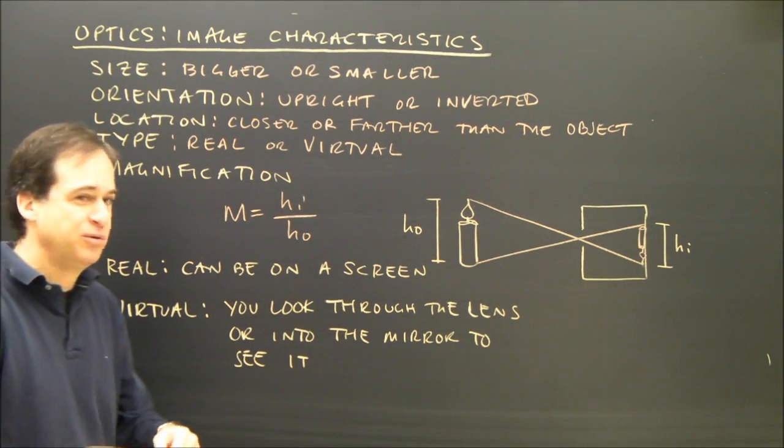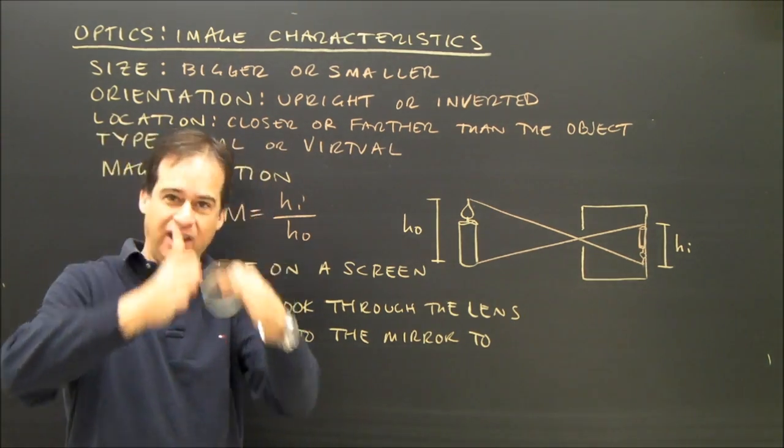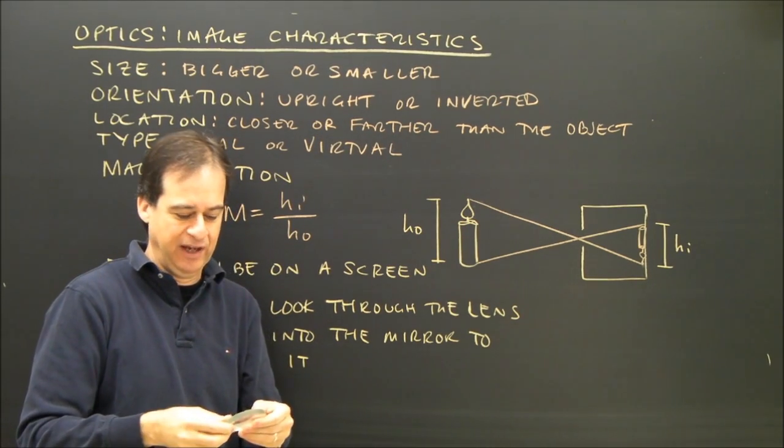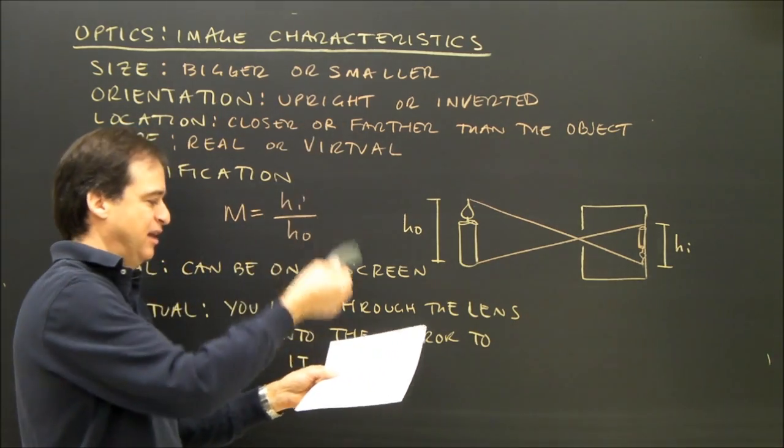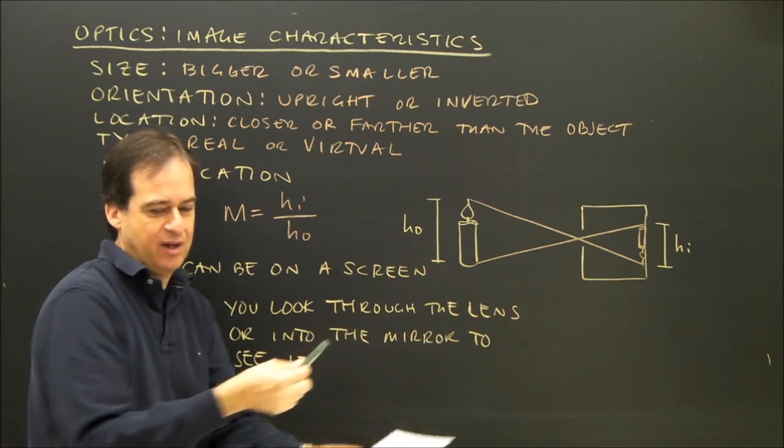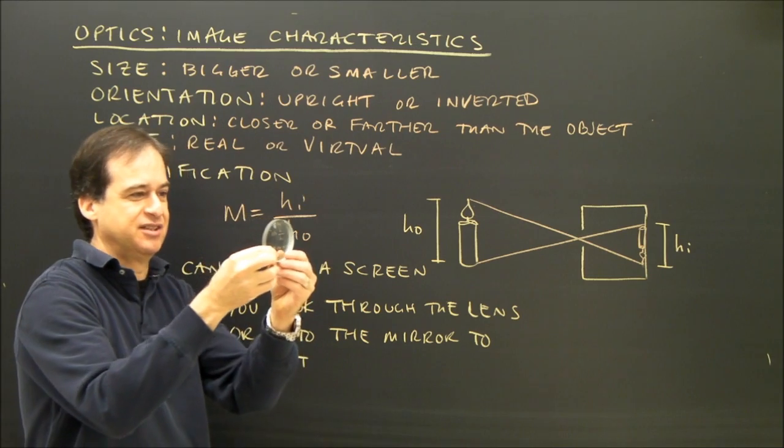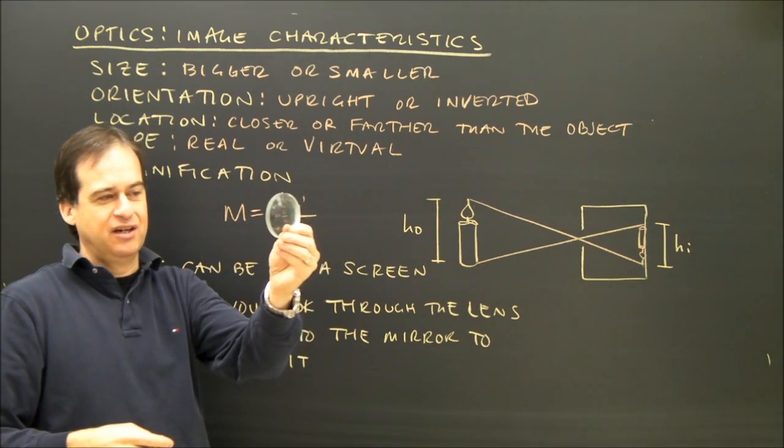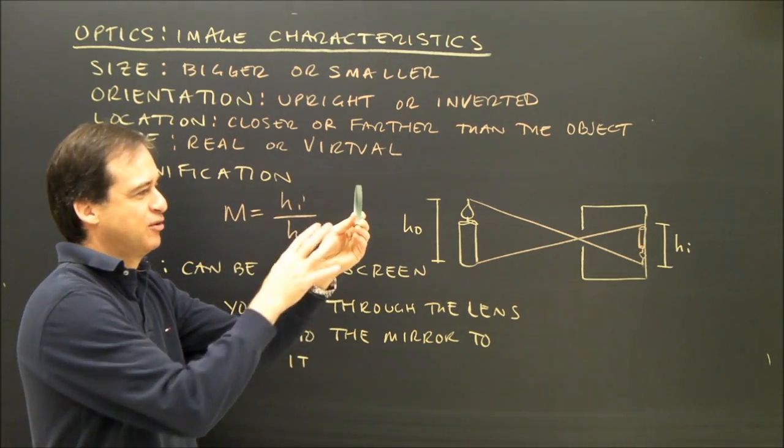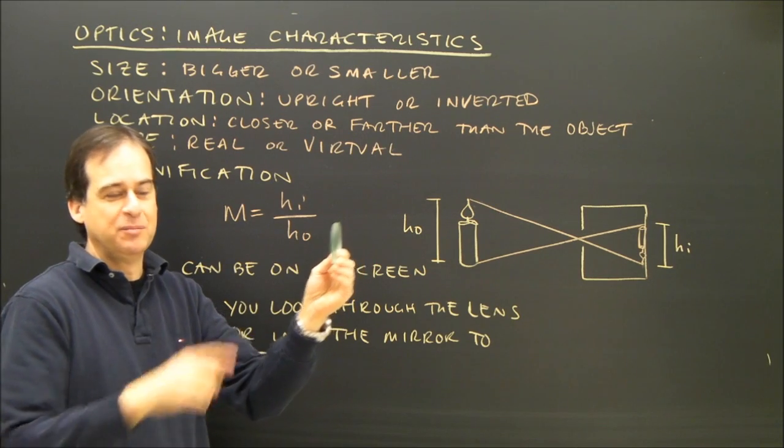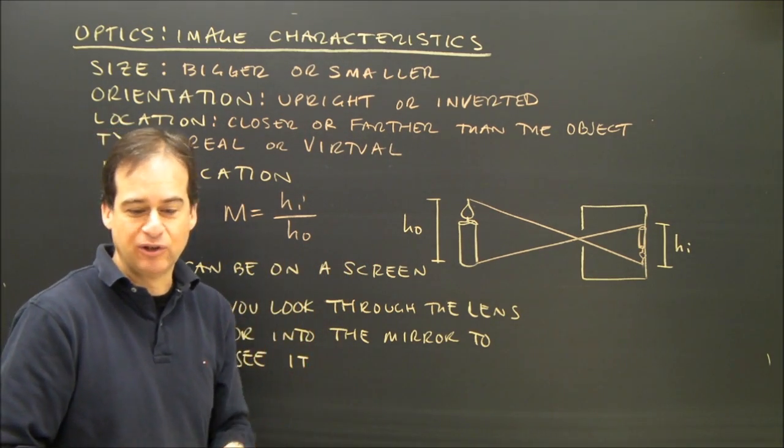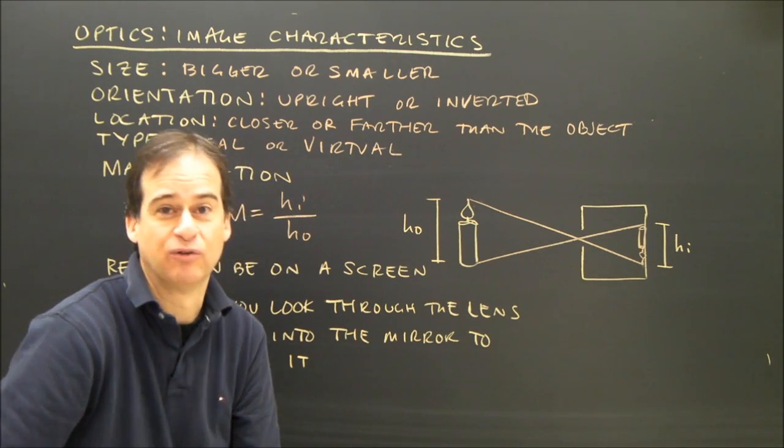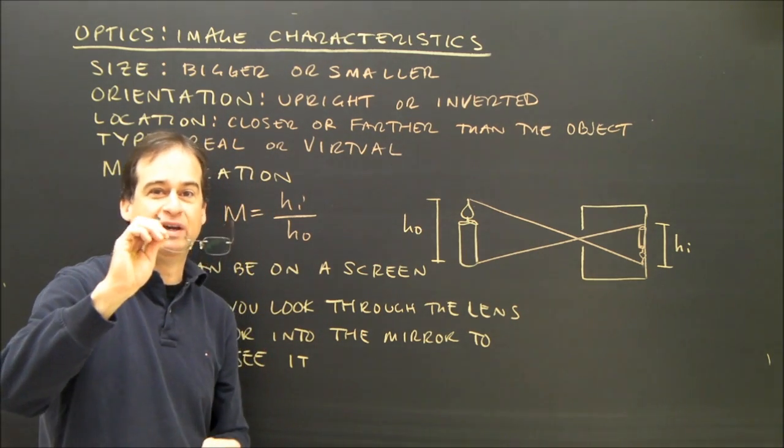If I look through this type of lens, this is a concave lens, which we'll discuss lenses a little bit later. But this lens, I can't project that light onto this paper. I have to look through this lens to see something. And this lens, I notice that everything I see through it is smaller and upright. But this is a virtual image because I have to look through it. So any device you look through to see an image gives you a virtual image. For example, my eyeglasses.